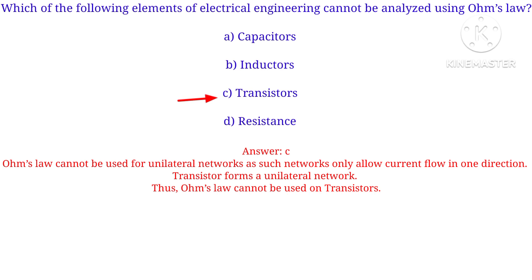Which of the following elements of electrical energy cannot be analyzed using Ohm's law? Ohm's law cannot be used for unilateral networks, such as networks that allow current to flow in one direction only — that is, the transistor.